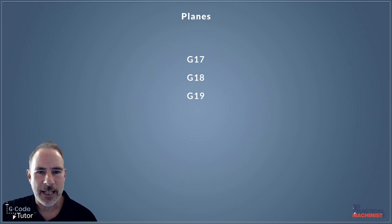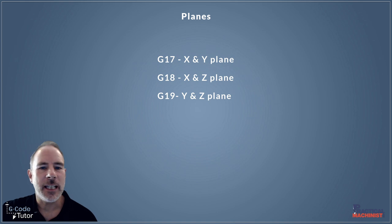If we have a look at this slide, our G17 is our X and Y plane, our G18 is our X and Z plane, and G19 is the Y and Z plane.